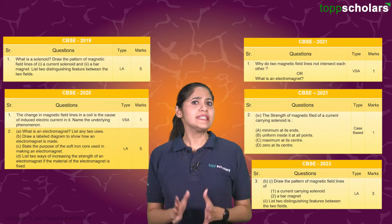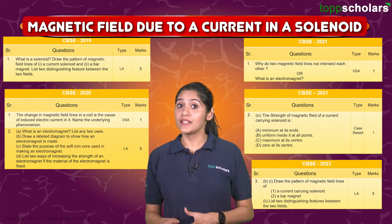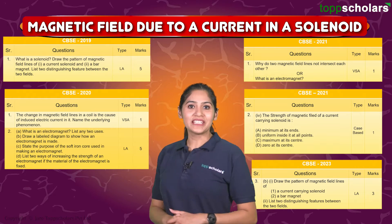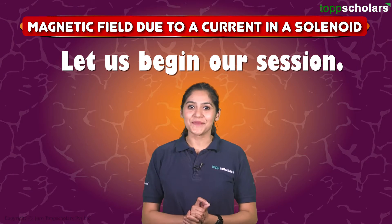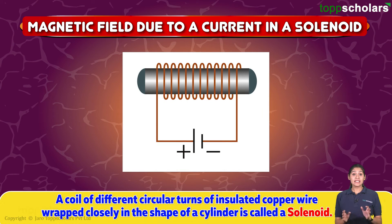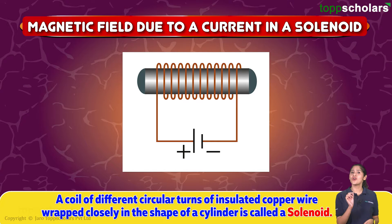Hello everyone. These questions came from the topic: magnetic field due to current in a solenoid. So, what are we waiting for? Let's begin our session. First of all, we should know what is a solenoid. It is a coil of many circular turns of insulated copper wire wrapped closely, usually around a piece of soft iron in the shape of a cylinder.